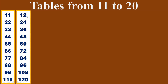Twelve times table. Twelve ones are twelve. Twelve twos are twenty-four. Twelve threes are thirty-six. Twelve fours are forty-eight. Twelve fives are sixty. Twelve sixes are seventy-two. Twelve sevens are eighty-four. Twelve eights are ninety-six. Twelve nines are one hundred and eight. Twelve tens are one hundred and twenty.